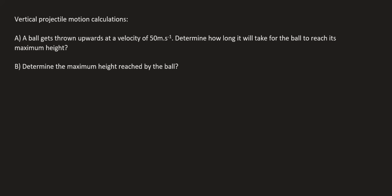So here's the first question. The first question says that a ball gets thrown upwards at a velocity of 50 meters per second. Determine how long it will take for the ball to reach its maximum height. Now you could definitely think of the question as follows: it starts off from the ground at 50 meters per second, and it's on its way up. Now we know that this ball is going to slow down, right? And remember in the previous video, by how much will it slow down? Well, every second it's going to slow down by 9.8 meters per second.